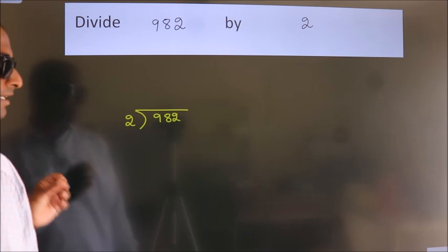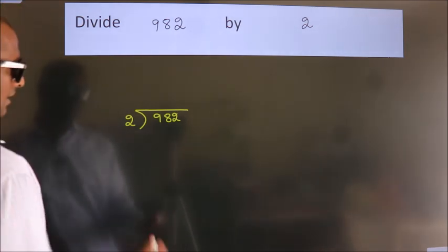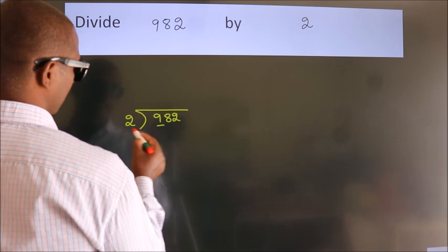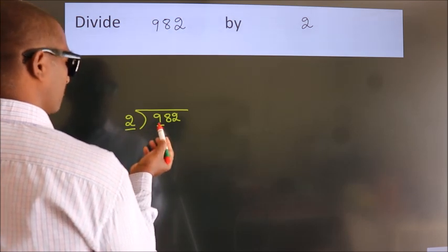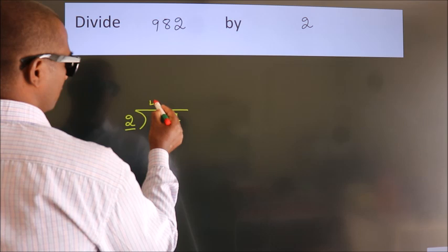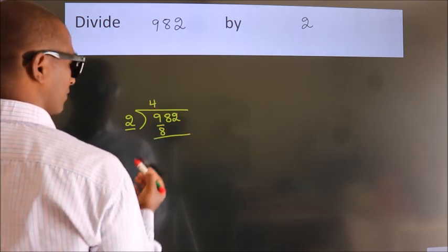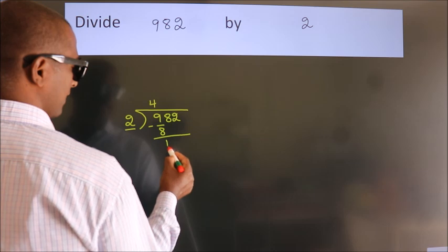This is step 1. Next, here we have 9, here 2. A number close to 9 in the 2 table is 2 times 4, which is 8. Now we subtract and get 1.